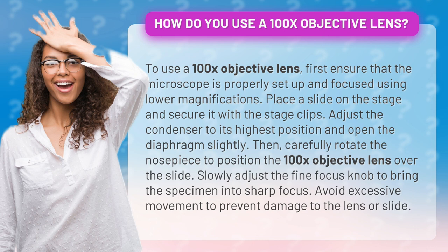Place a slide on the stage and secure it with the stage clips. Adjust the condenser to its highest position and open the diaphragm slightly. Then, carefully rotate the nosepiece to position the 100x objective lens over the slide.